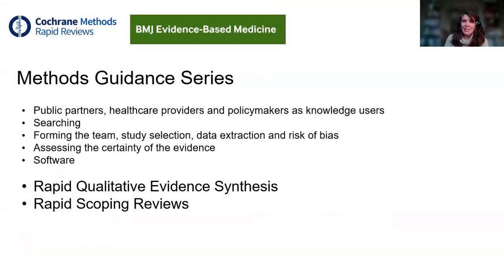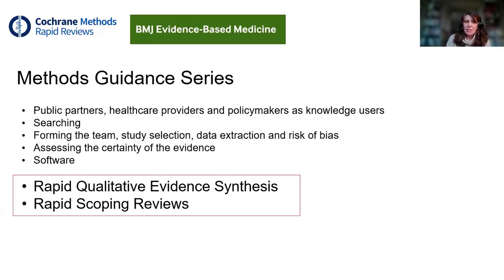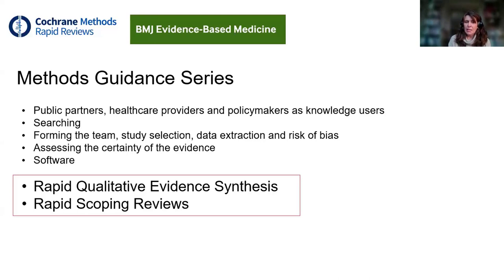Today's session, as Barbara's already mentioned, is actually part of a series. The Cochrane Rapid Review Methods Group have undertaken a series of guidance papers, and there's a list of topics covered in previous editions being published in BMJ Evidence-Based Medicine. The last two sessions are focusing on the application of rapid approaches to specific types of evidence synthesis. Two weeks ago, Andrew Booth looked at qualitative evidence synthesis, and today we're looking at rapid scoping reviews.